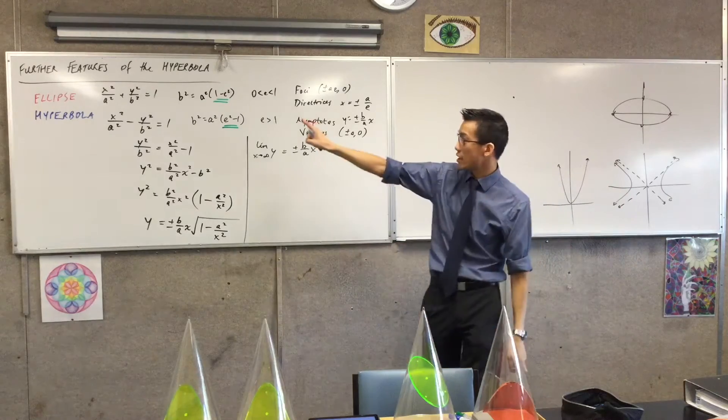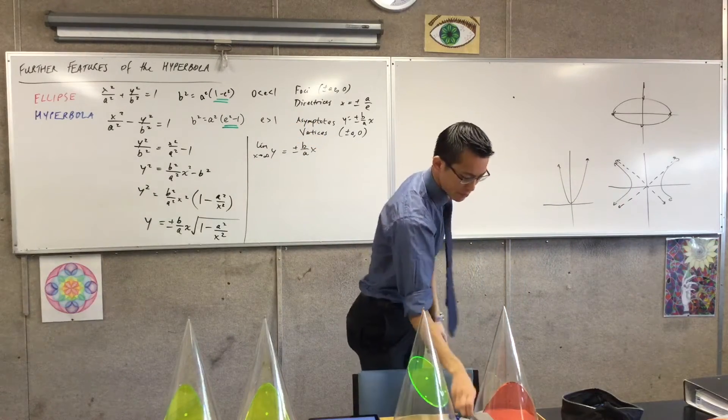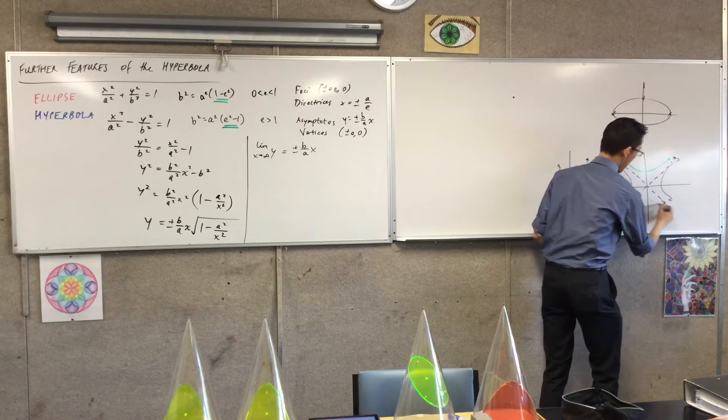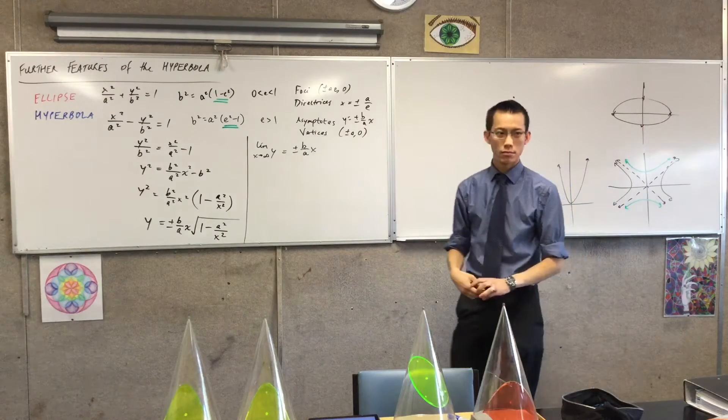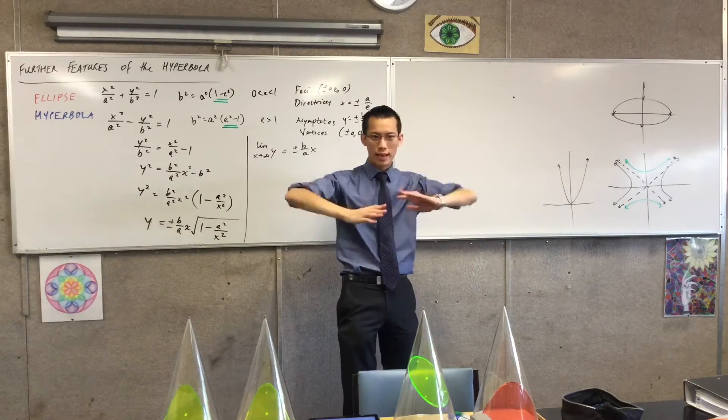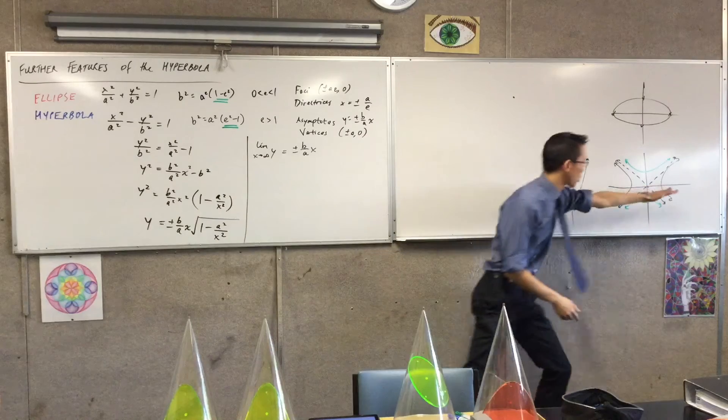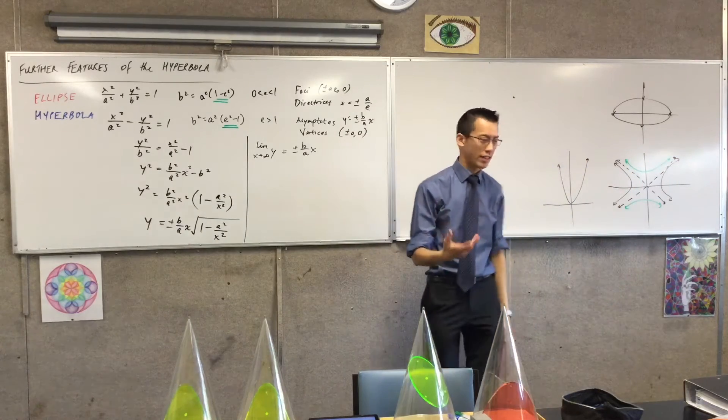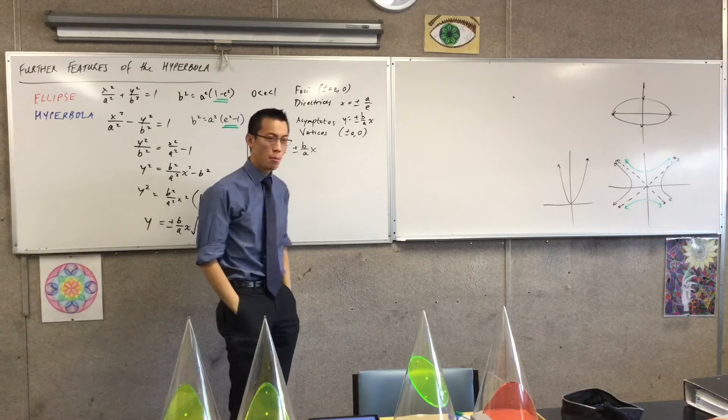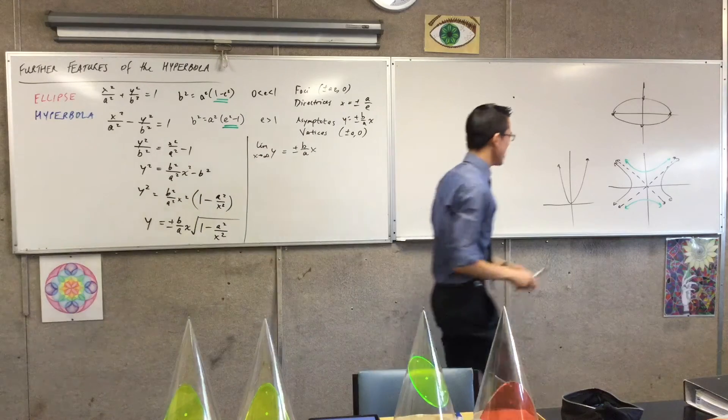There's no way you can start from that form and get to a graph like this. Why is that? Algebraically, why is it impossible? Because number one, we've got asymptotes, so I can't sort of cross over there. But more importantly, because keep in mind, those are oblique asymptotes.